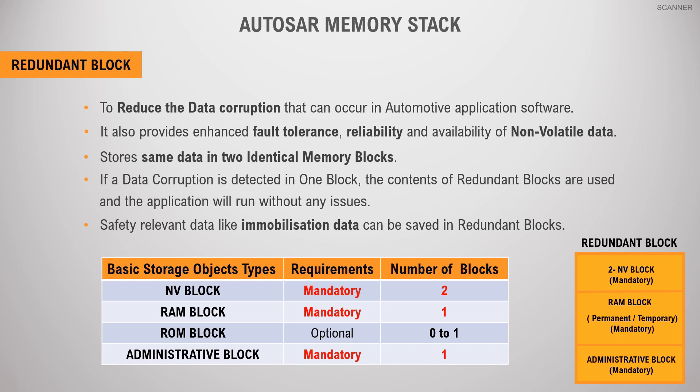The minimum requirement for a redundant block management type is that it must have two NV blocks, one RAM block, one administration block, and an optional ROM block.